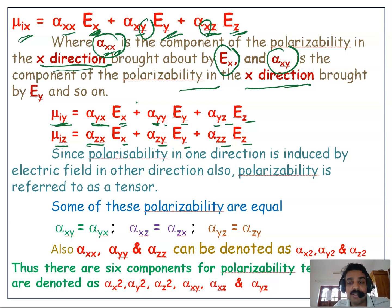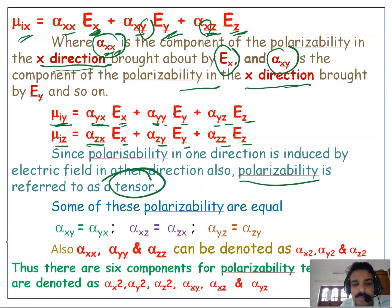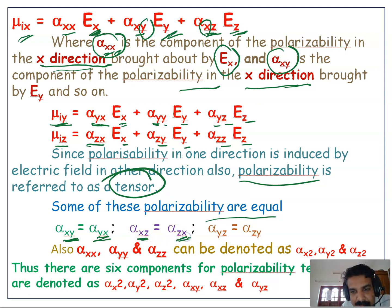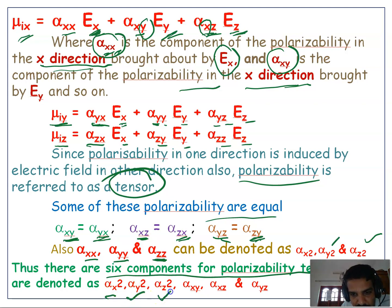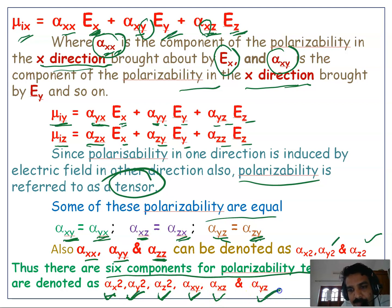Polarizability is actually a tensor. Some of these polarizabilities are equal: α_xy = α_yx, α_xz = α_zx, and α_yz = α_zy. Also, α_xx, α_xy, α_xz can be written as x², y², z² respectively. So there are six components for the polarizability tensor: α_x², α_y², α_z², α_xy, α_xz, and α_yz. This is an important point — there are six components for the polarizability tensor.